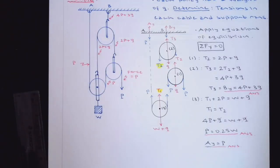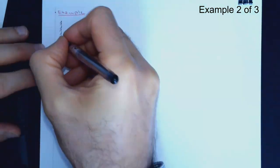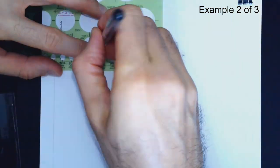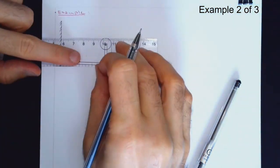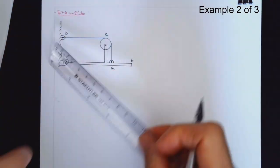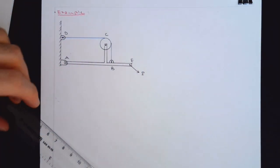That's it for this problem. Let's move on to the next one. In the second example, I would like to consider a frame and pulley together. This is one level above the previous question.